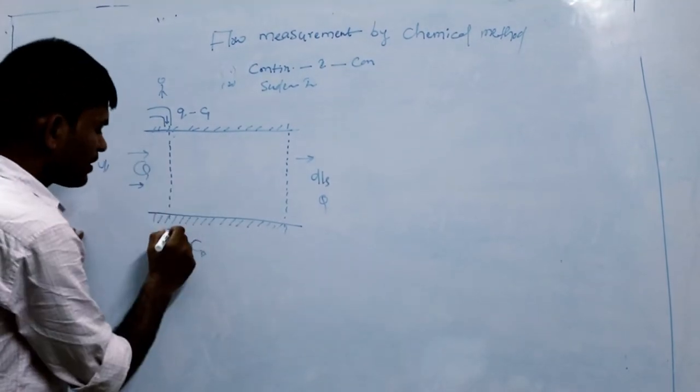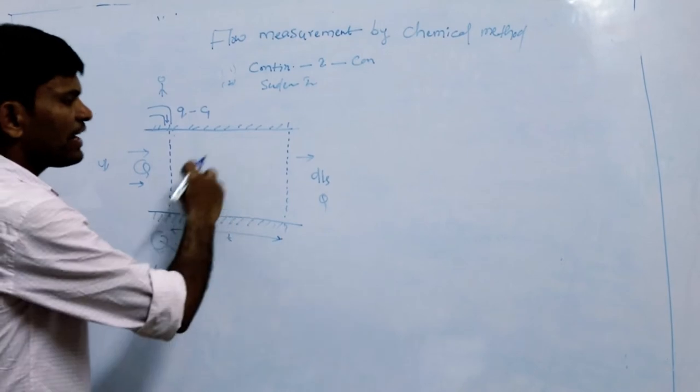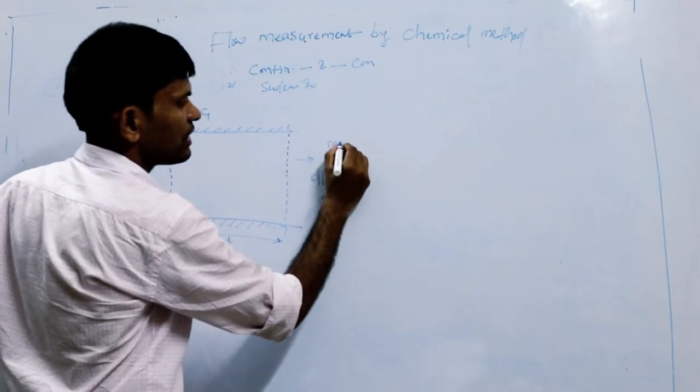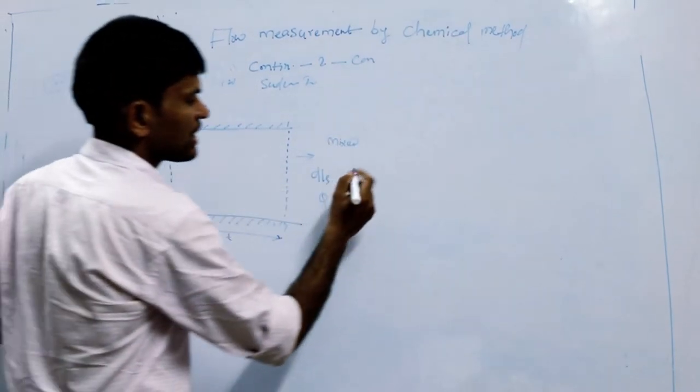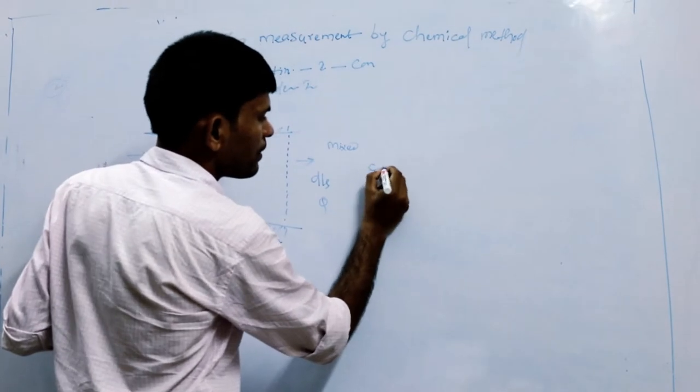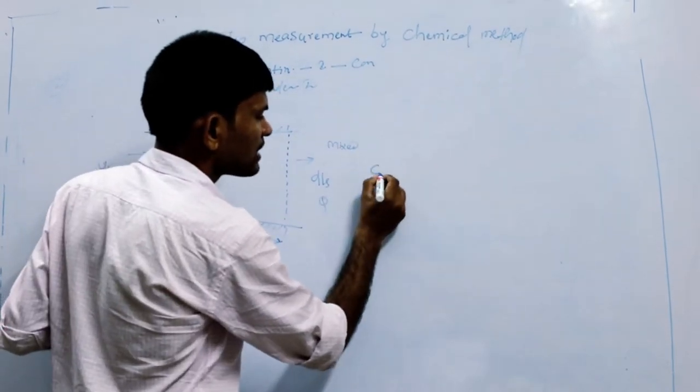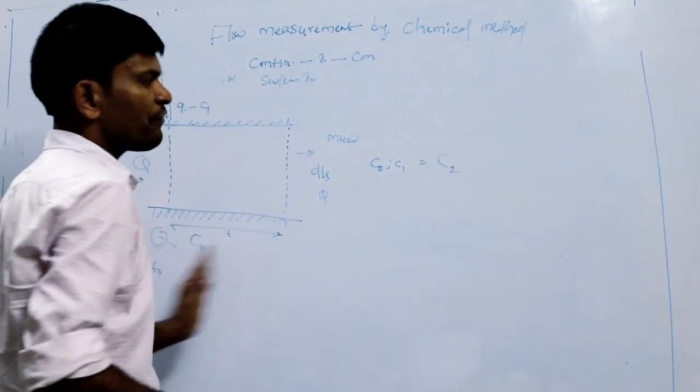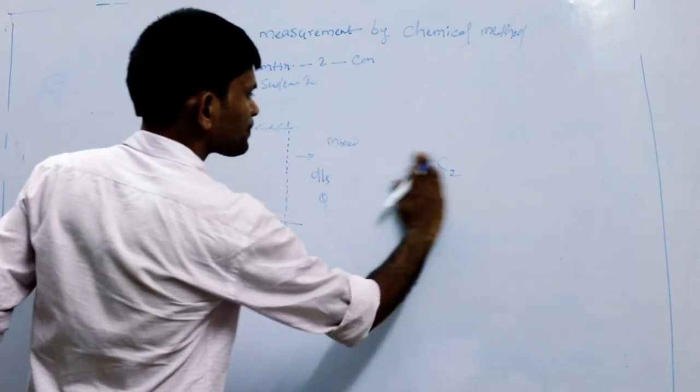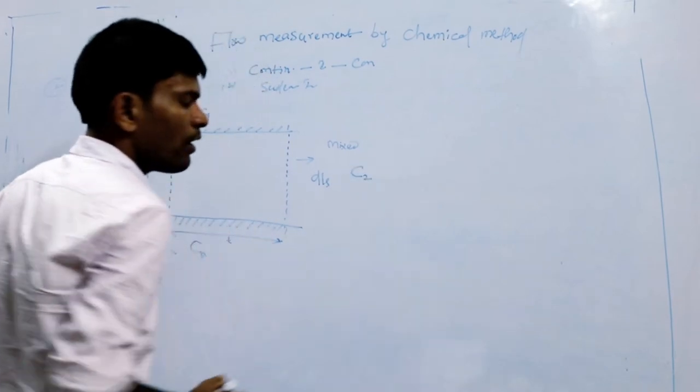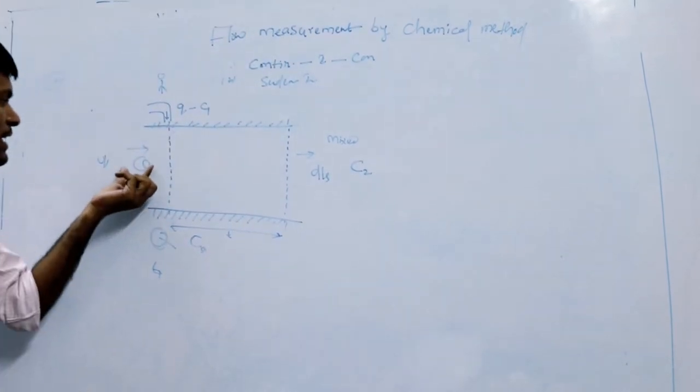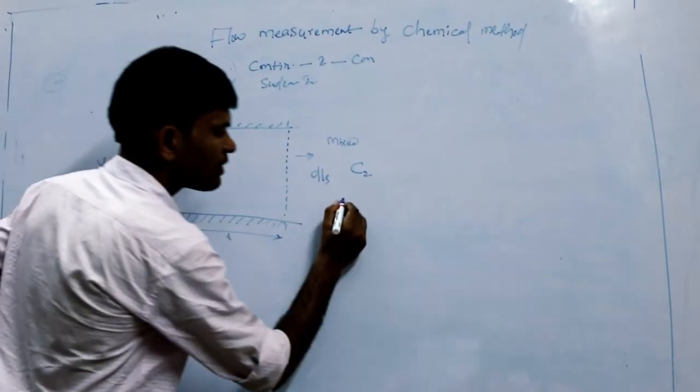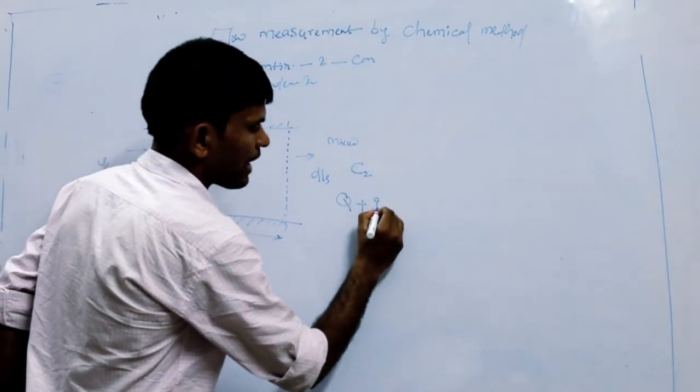Now after traveling a certain time downstream, you're measuring the mixed concentration. You're measuring the mixed concentration, that is C2. So the concentration is C naught and C1, and C2 is the final concentration. Now suppose Q water is flowing initially and you add a small q, so the output is Q plus what you added.